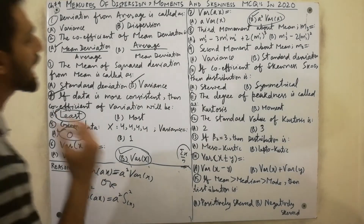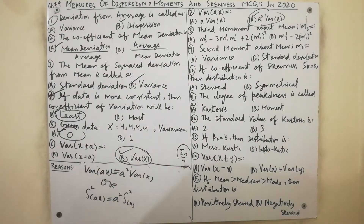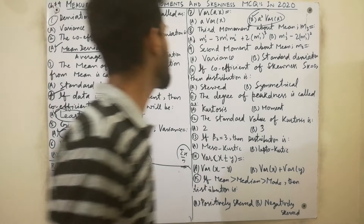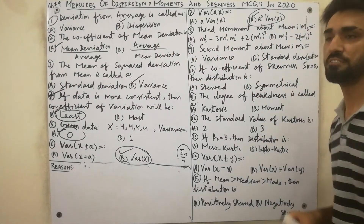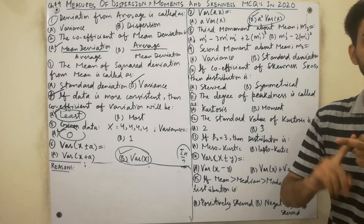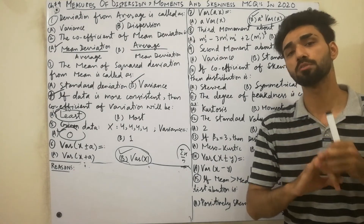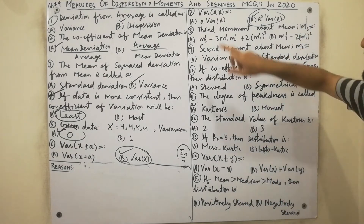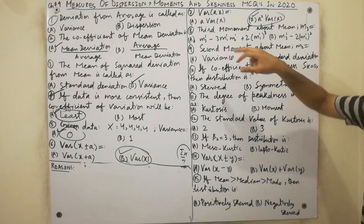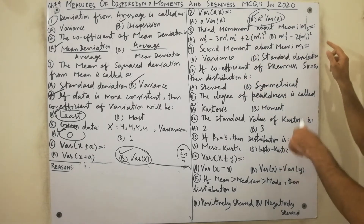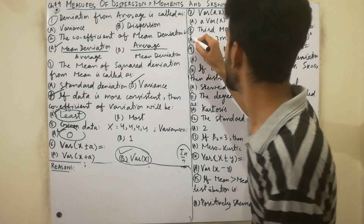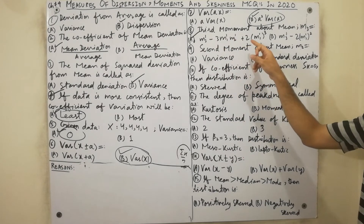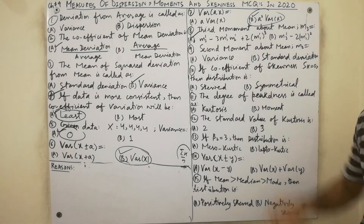Moving to MCQ eight: the first, second, third, and fourth moments are very important in any MCQ calculation. The third moment about the mean, m3, is always equal to m3-prime minus 3·m1-prime·m2-prime plus 2·(m1-prime) cubed. Must remember this moment formula.